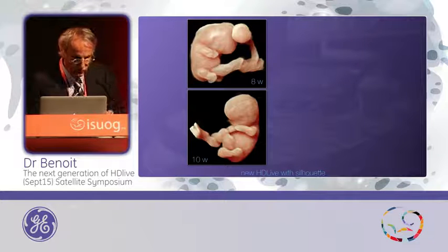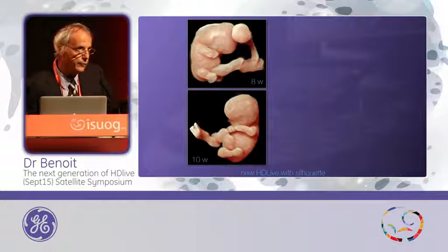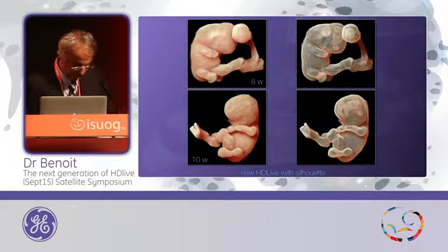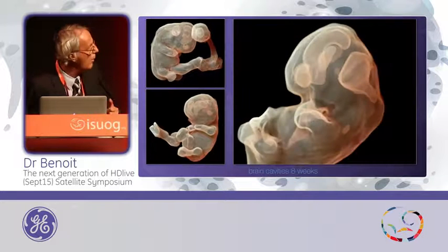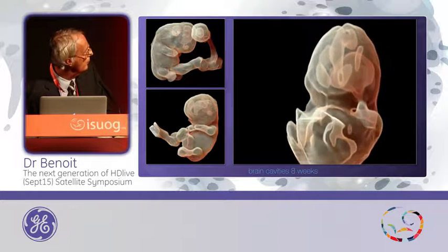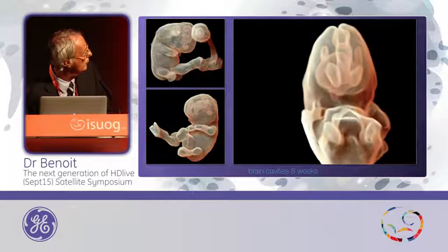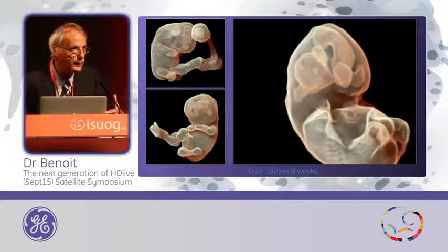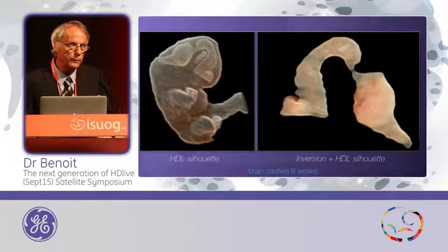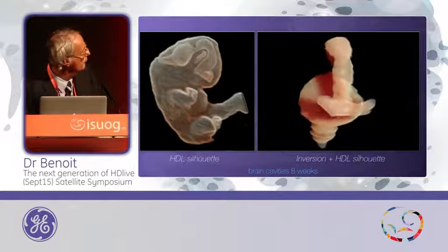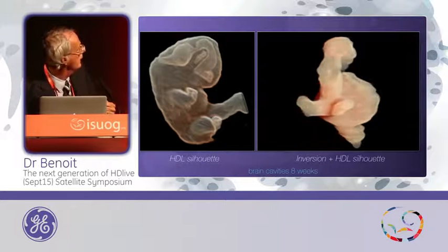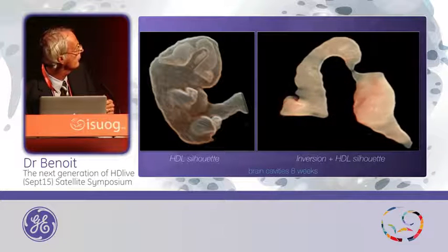You can see embryos at 8 weeks and 10 weeks of pregnancy when the level of silhouette is low. Now we will increase the level of silhouette and you can see inside the brain cavities clearly. This is an eight-week embryo with the brain cavities — the two lateral ventricles on the anterior part and the rhombencephalon on the posterior part. This is quite easy to obtain and you don't have to use a magic cut. With this mode, you can clearly first choose the silhouette, then cut exactly and extract the brain vesicles.